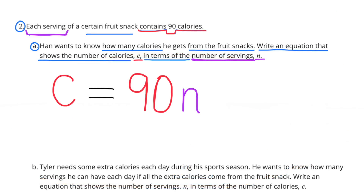Number 2. Each serving of a certain fruit snack contains 90 calories. A. Han wants to know how many calories he gets from the fruit snacks. Write an equation that shows the number of calories, C, in terms of the number of servings, N. The equation would be C equals 90N.